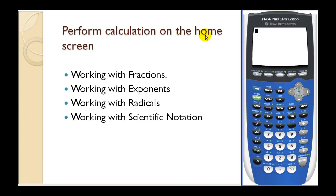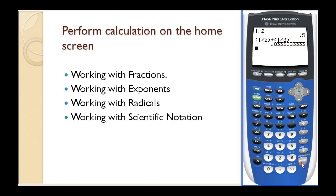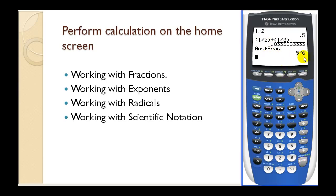Now let's talk about how we can perform calculations on the home screen. Working with fractions is very easy on this graphing calculator. There is no special fraction key — remember that a fraction bar is just a division symbol. So if I want to enter one half, I would just type one divided by two. If I press enter, it will convert this fraction to a decimal. But to find the sum of one half and one third, I like to enter each fraction in a set of parentheses: one divided by two, close parentheses, plus, open parenthesis, one divided by three, close parenthesis. When I press enter, it gives a decimal approximation, but we can convert it back to a fraction by pressing math — the fraction option is already highlighted — press enter then enter, and that sum is five sixths.